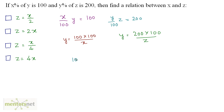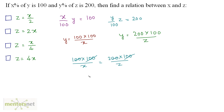We have these two equations with Y common on the left hand side, so we can equate the right hand sides directly. So 100 times 100 upon X equals 200 times 100 upon Z. One of the hundreds cancels out, giving us Z is equal to 2 times X. So option B is the right answer.